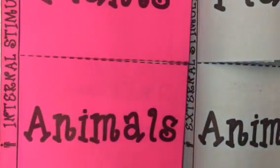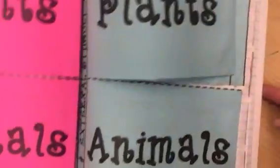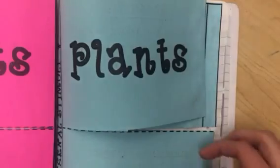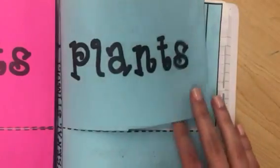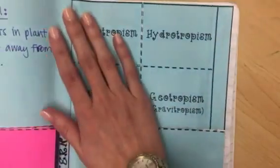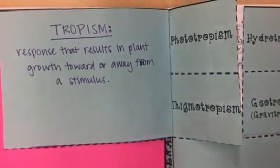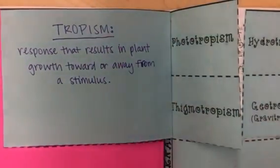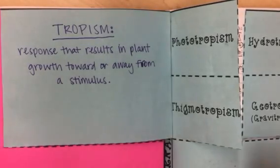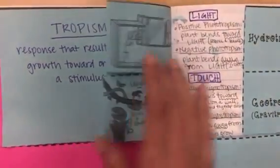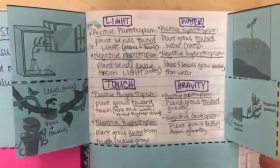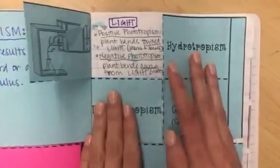External stimuli are very different — there are four external stimuli for plants. These are things that come from outside your body or outside the plant. They're called tropisms. A tropism is a response that results in plant growth toward or away from a stimulus. The four stimuli in purple here are the stimuli, and the plant responds accordingly.